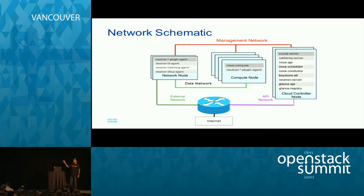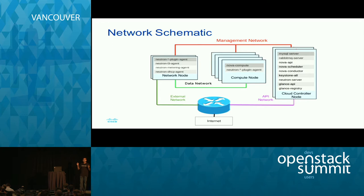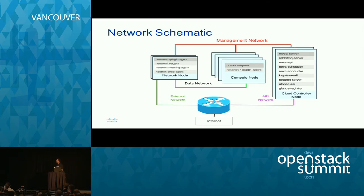This is the network schematic of a typical OpenStack installation. There is the management network, which is needed for the OpenStack components to speak to themselves, and the addresses on this are not exposed to the outside world. Then there is the data network in green, where the VMs actually communicate — the data communication between the VMs happens there.